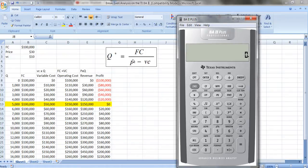If we use the formula here, fixed costs divided by price minus variable costs, let's see if we can find the breakeven point. The fixed costs are $100,000 divided by 30 minus 10, which is 20. And so we get a breakeven of 5,000.